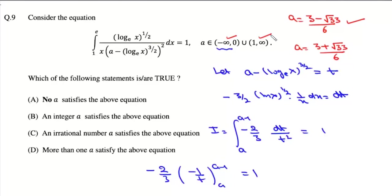So this positive value will lie in this interval, so both of these are solutions to this equation. So the answer to this question is an irrational number a satisfies the above equation, option C, and more than one a satisfy the above equation, option D. So the correct options are C and D, and there is no integer satisfying this equation.